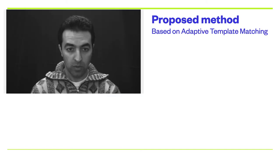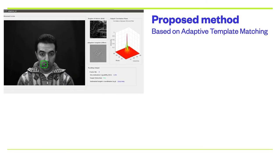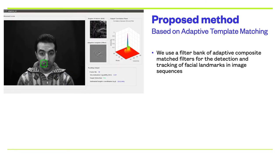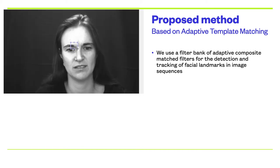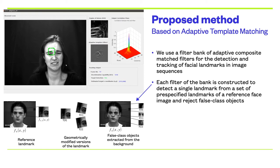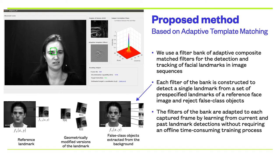Here we briefly describe the proposed method. We suggest the use of a filter bank of adaptive composite matched filters for the detection and tracking of facial landmarks in image sequences. Each filter of the bank is constructed to detect a single landmark from a set of pre-specified landmarks of a reference face image and reject false class objects. The filters of the bank are adapted to each captured frame by learning from current and past landmark detections, without requiring applying a time consuming training process.